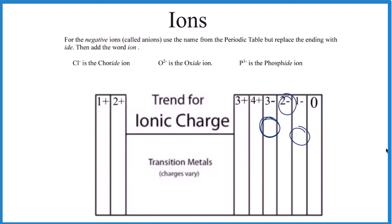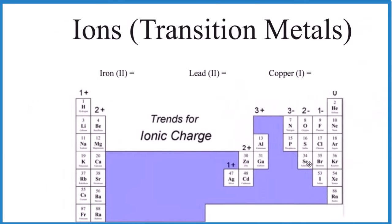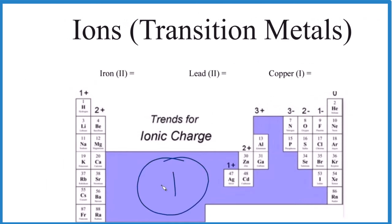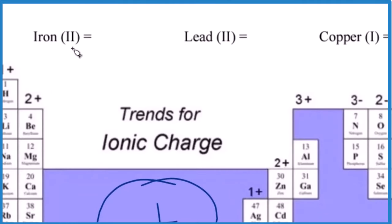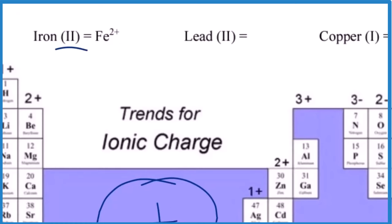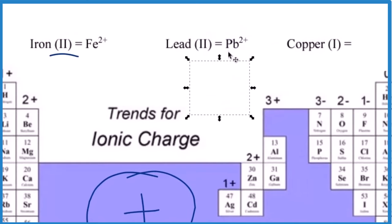For transition metals, these are positive but most of them have charges that vary, so we tell you the charge right in the name. Iron two becomes Fe²⁺, lead two becomes Pb²⁺, copper one becomes Cu⁺. Those aren't too bad.